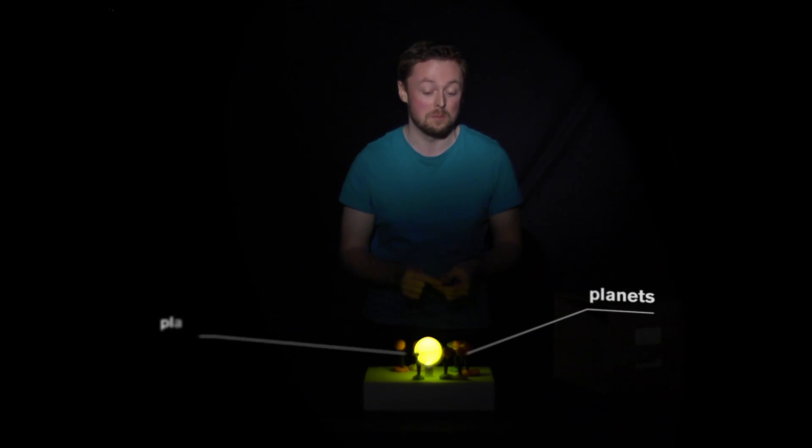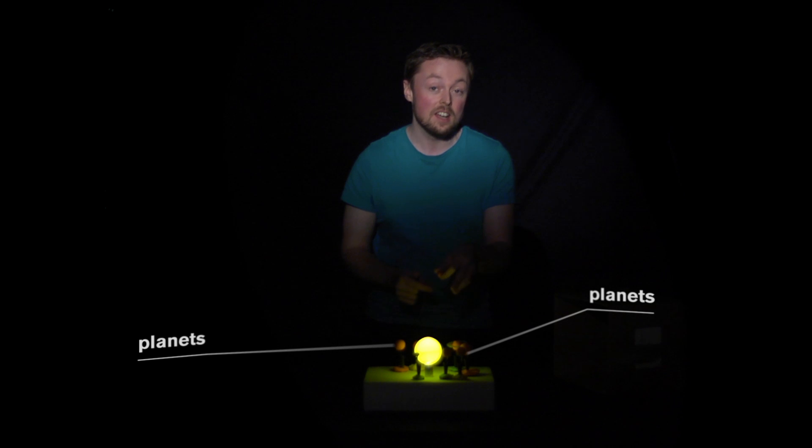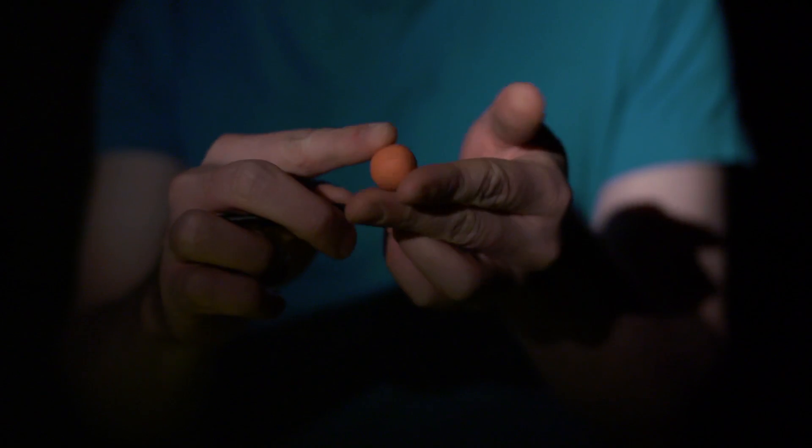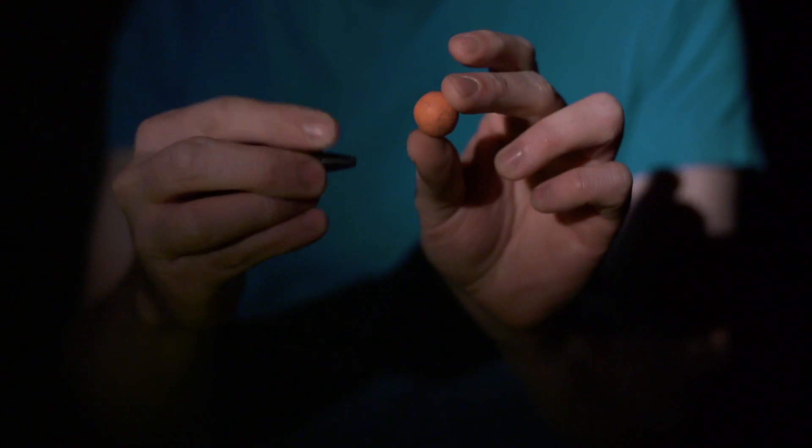And also we need a light source, something for the Sun. So for our planets we can just roll up some plasticine into a ball like this, and we can also make some features.